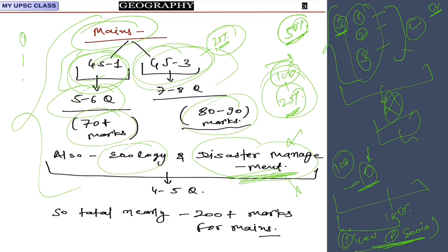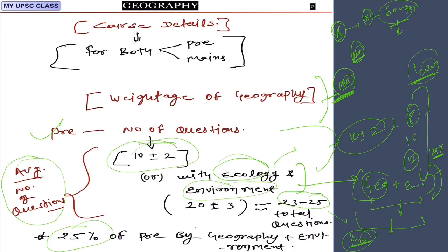Mixing geography with ecology, environment, and disaster management — which is also a separate subject for mains — becomes very easy once you understand physical geography. Disaster management covers topics like earthquakes, tsunamis, volcanoes, which are all discussed in physical geography. We will complete disaster management in six to seven lectures. If you read geography, everything becomes easy. Mains weightage for geography, ecology, and disaster management together is nearly 200-plus marks, which is more than 20 percent.